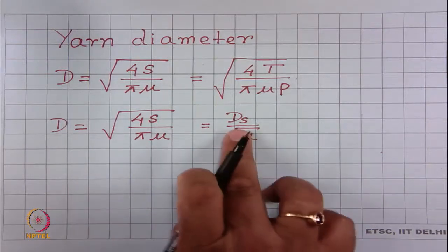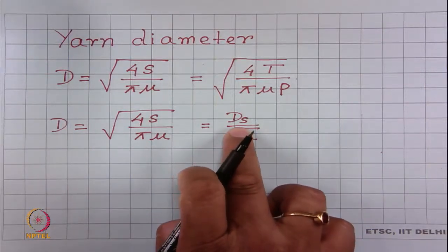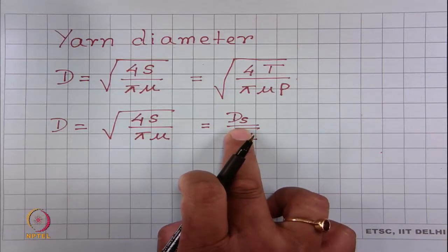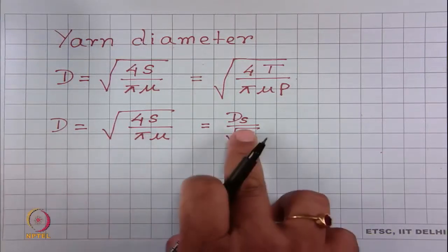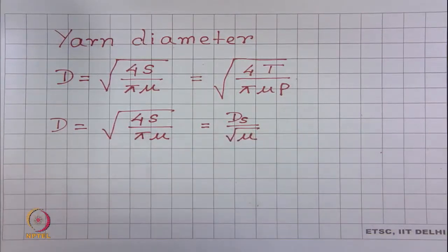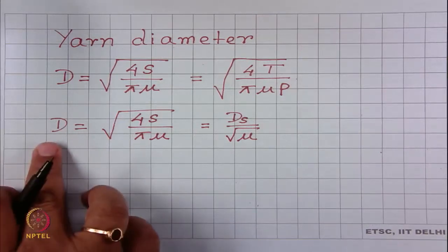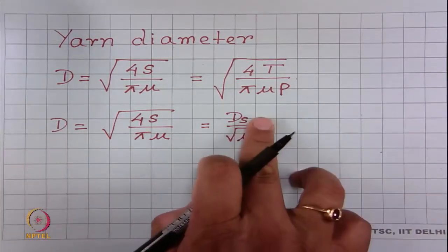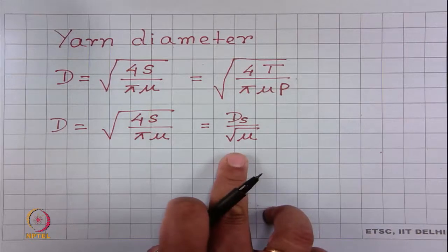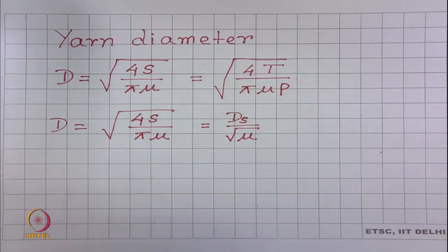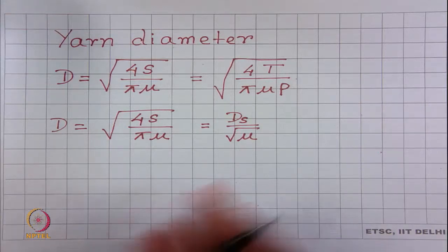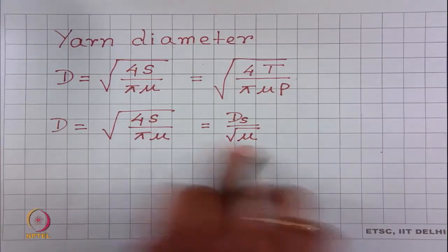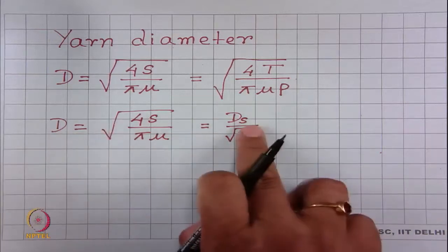We can also write the yarn diameter expression as d equals d_s divided by root over mu, where d_s stands for substance diameter. So we talk about two diameters: yarn diameter and substance yarn diameter. How they are related? Yarn diameter equals substance diameter divided by root over packing density. So if we know packing density and yarn diameter, we can find out substance diameter.